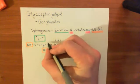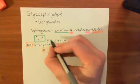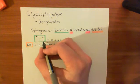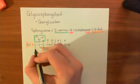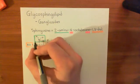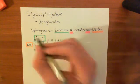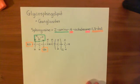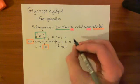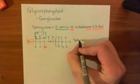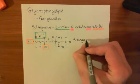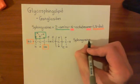Now we finish everything off by adding hydrogens. A hydrogen off the carbon here, a hydrogen off here, a hydrogen off the second carbon, and two hydrogens off the first carbon. That finishes everything off. So this is the structure of sphingosine — or 2-amino, 4-octadecine, 1,3-diol.